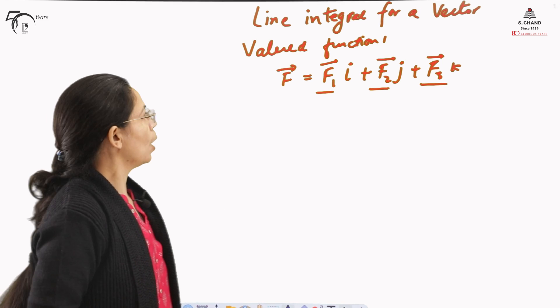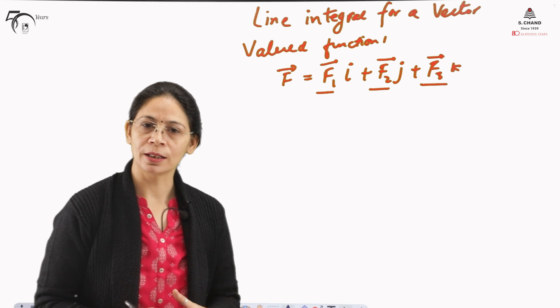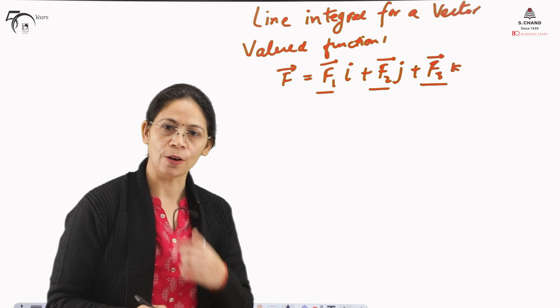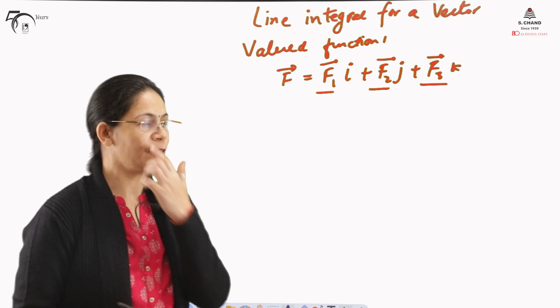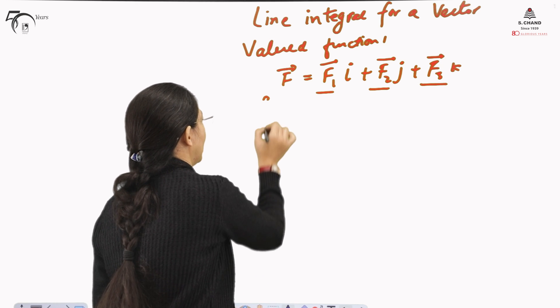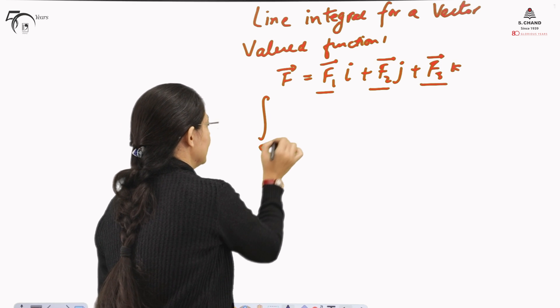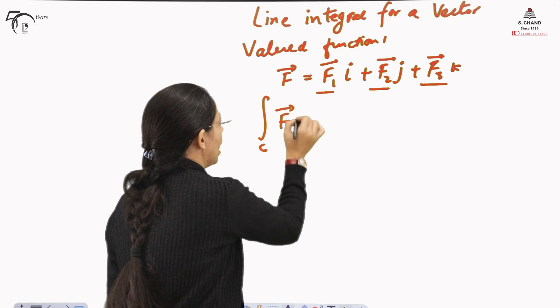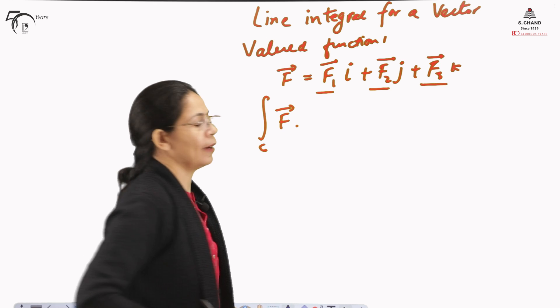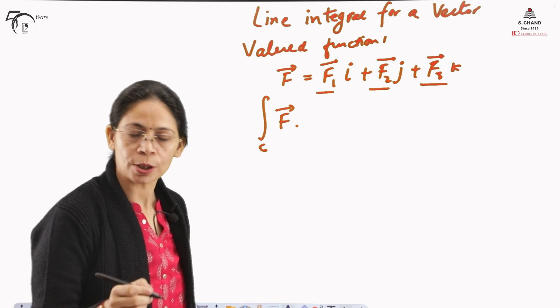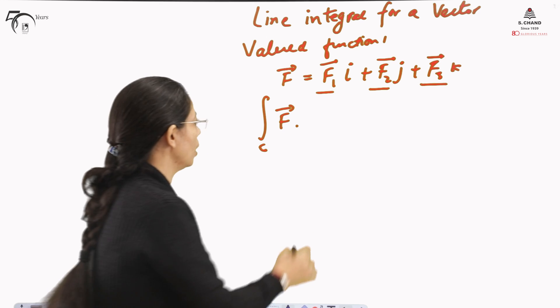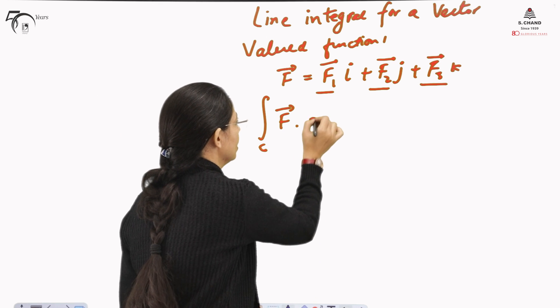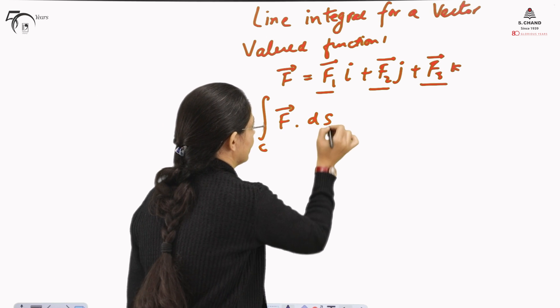We will find the line integral of this vector valued function, represented as the integral over C of F dot dS, where C is the curve over which we need to evaluate the integral.